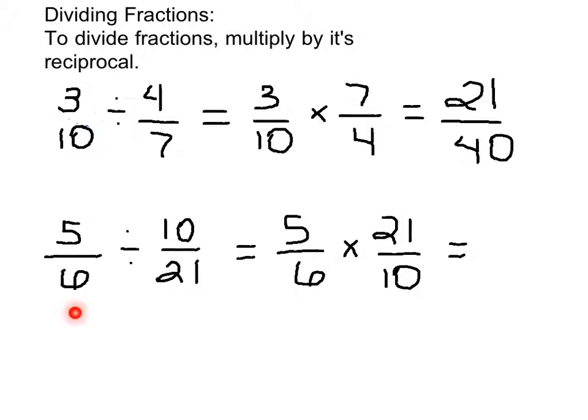Below we have 5 sixths divided by 10 twenty-firsts. We rewrite the problem as 5 sixths times the reciprocal, so we have 21 over 10.